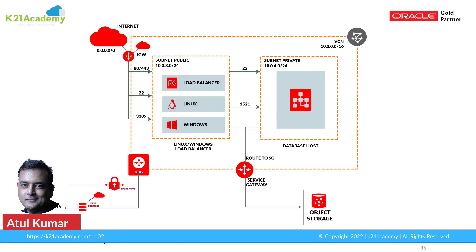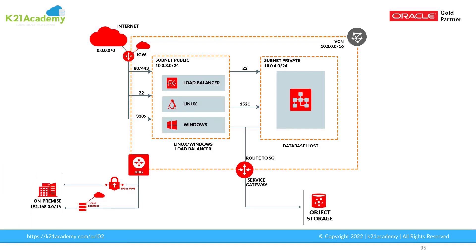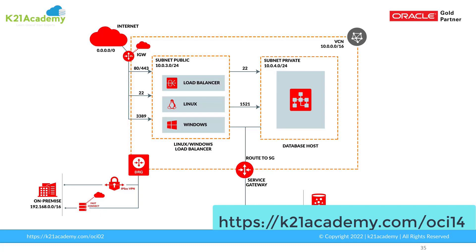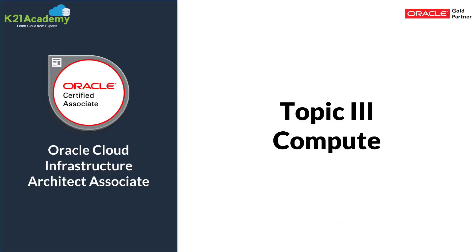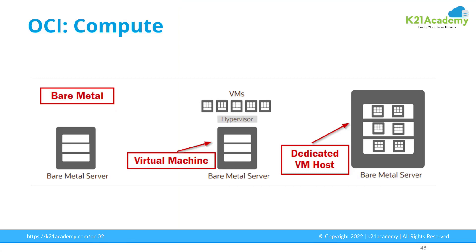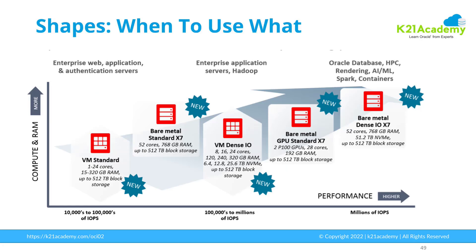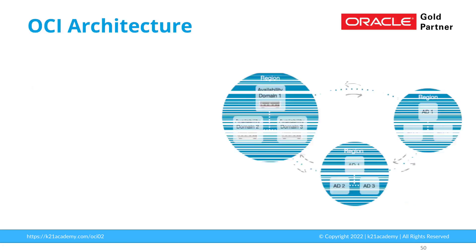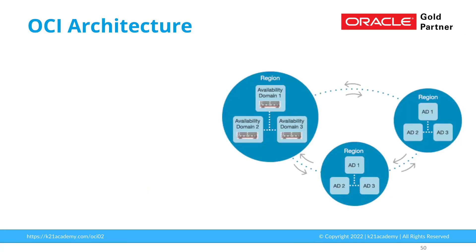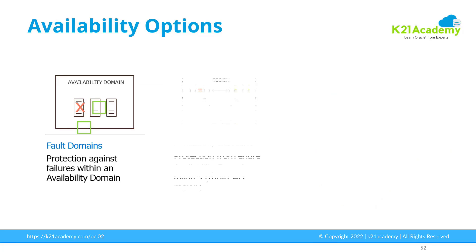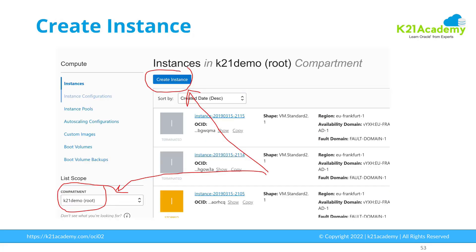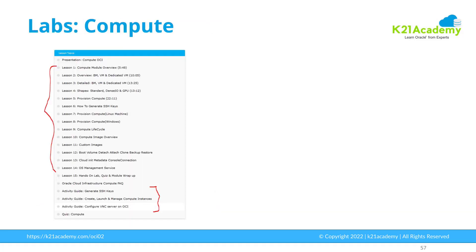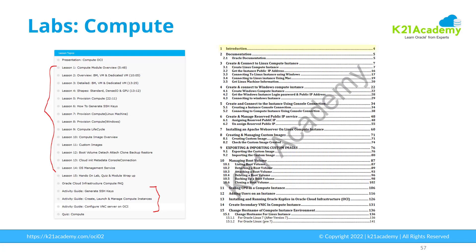If you're watching this anywhere other than our blog, more information about networking will be at k21academy.com/OCI14. In the next episode, part three of the five-part video series, I'm going to talk about compute — three different types: bare metal, virtual machines, and dedicated VM host; different shapes and when to use them; OCI architecture with region, availability domain and fault domain; availability options; and hands-on tasks like creating an instance, image types, boot volumes, and console connections.